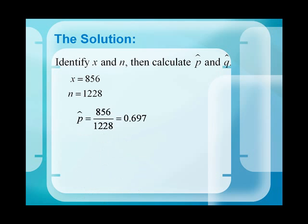So, p-hat is x over n, or 856 over 1,228, which is approximately 0.697.